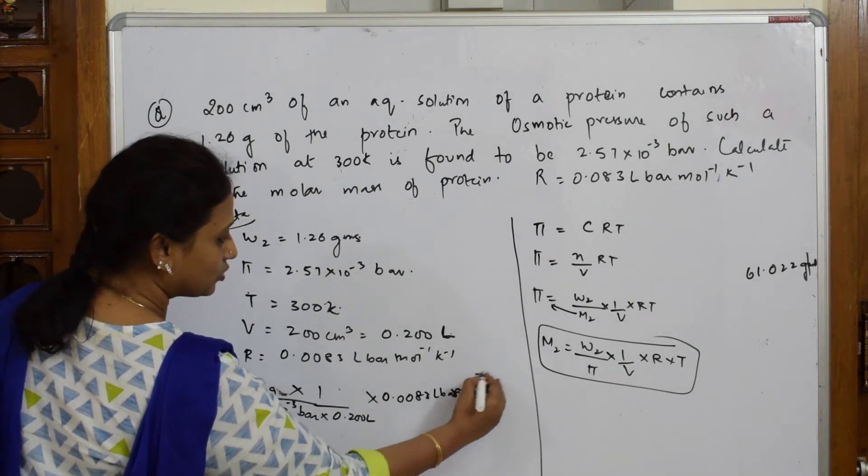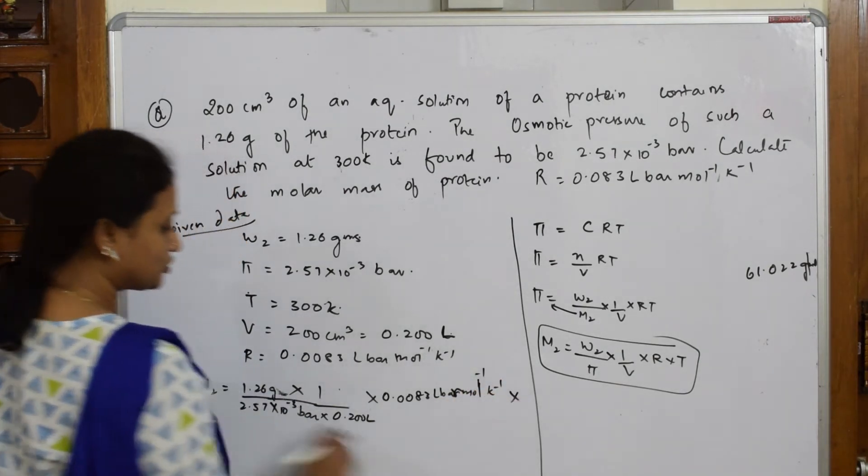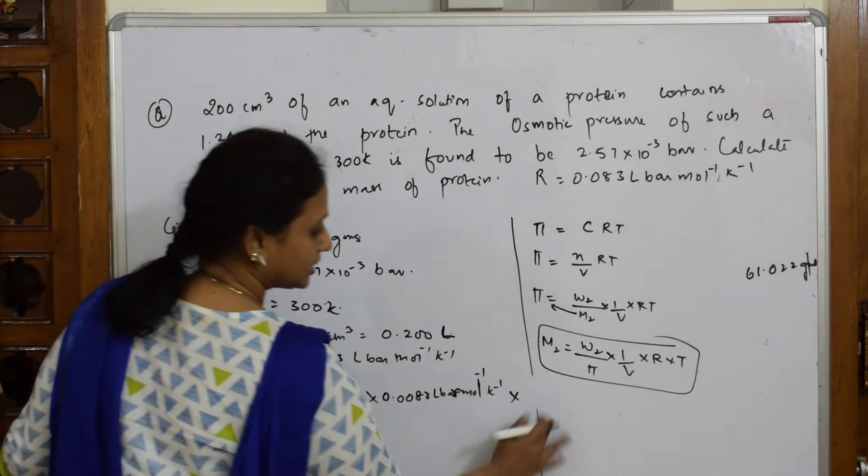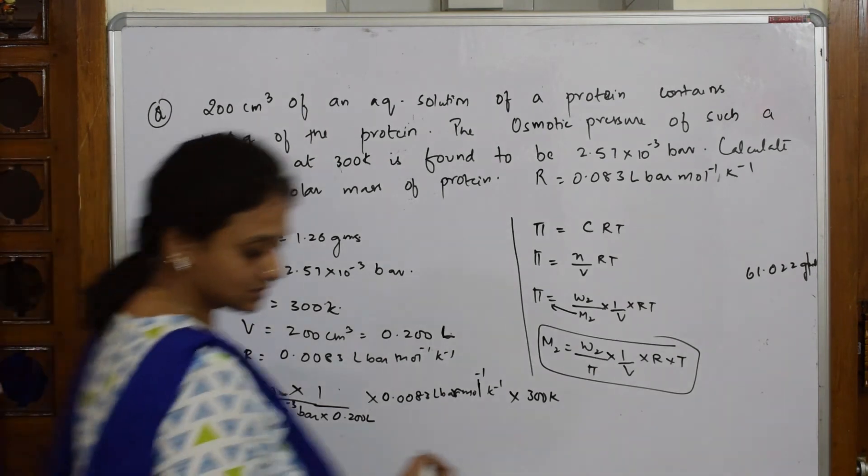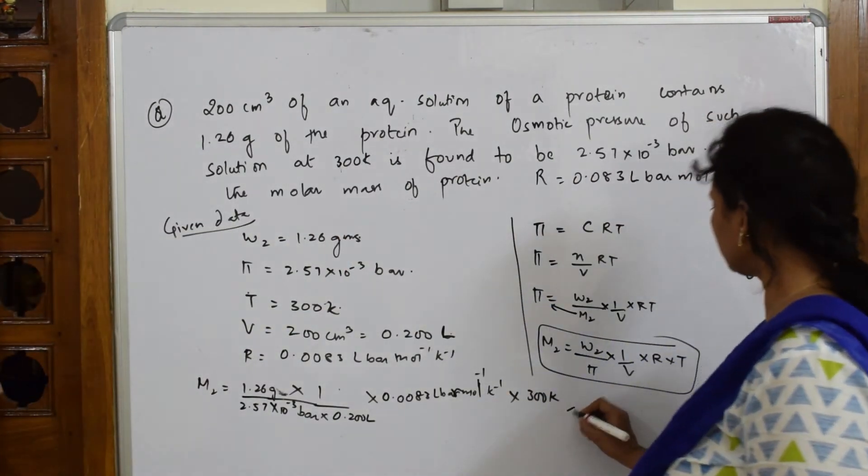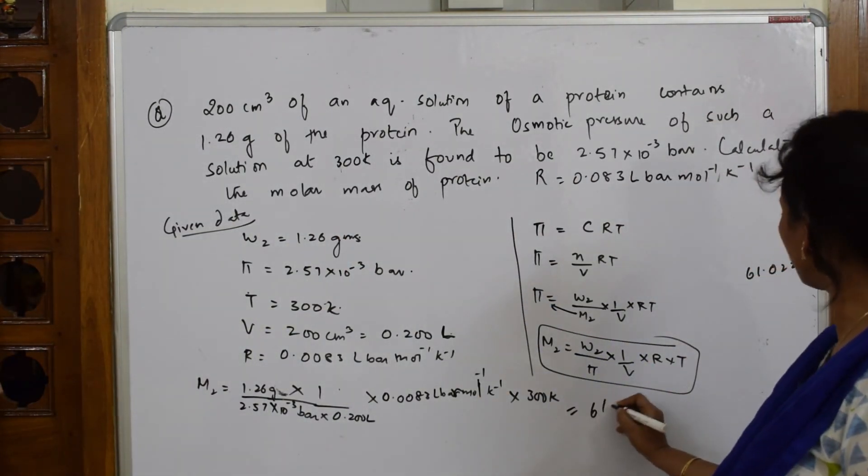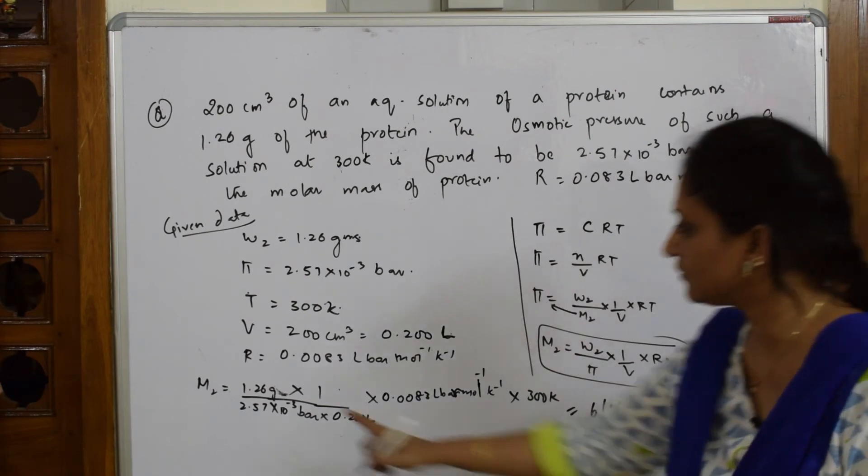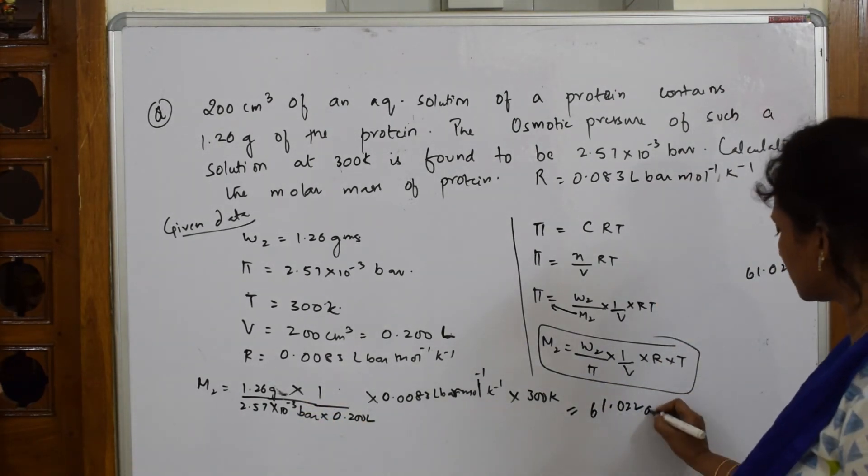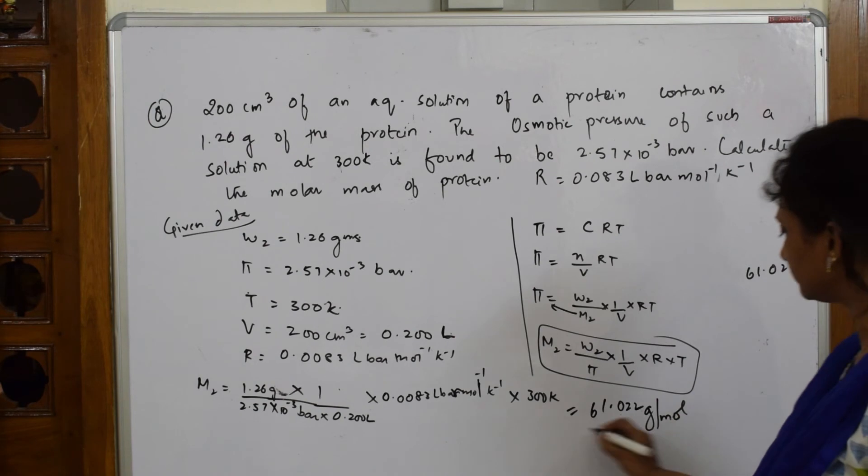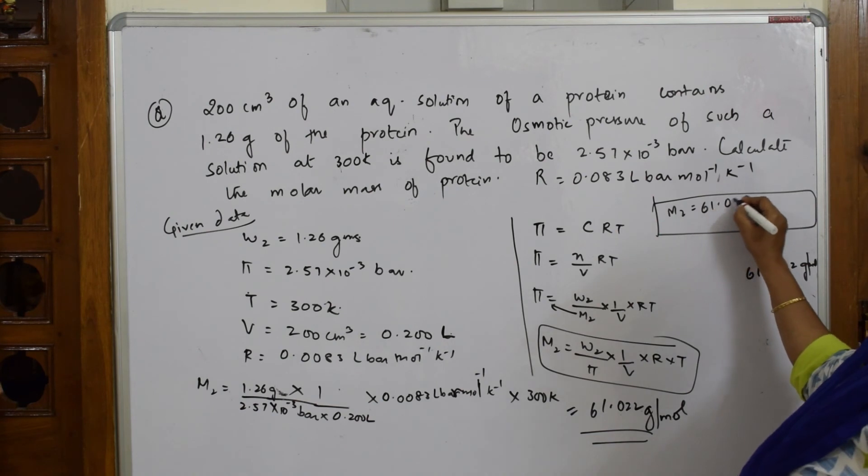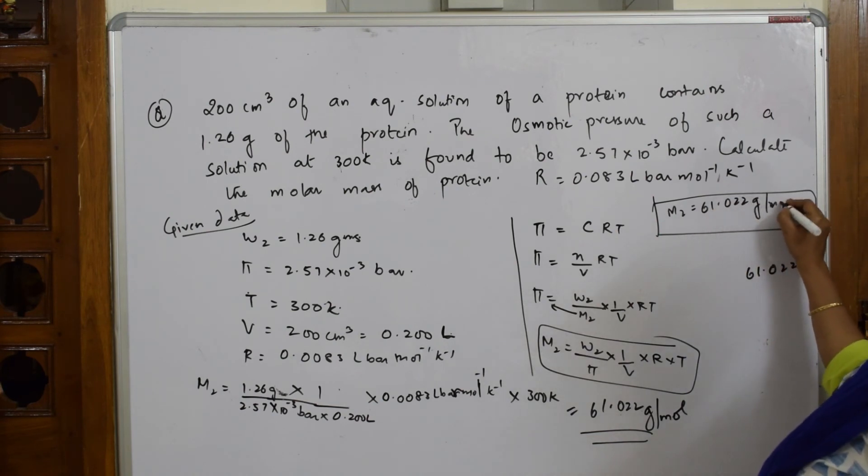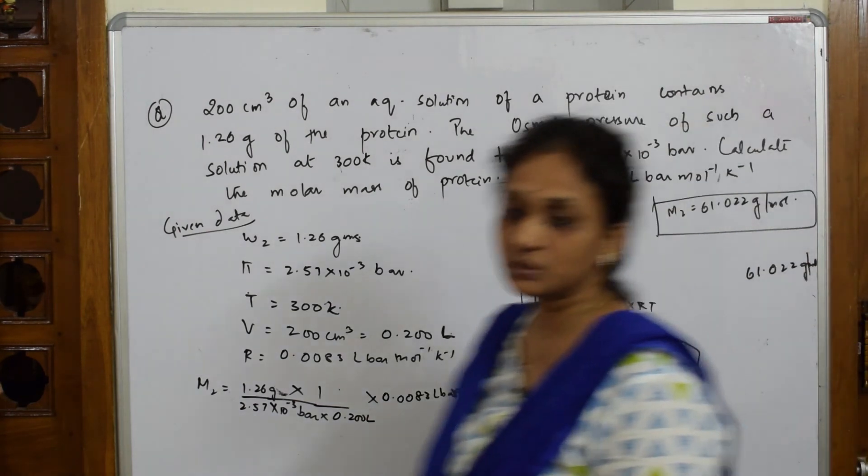When I solve this, I get an answer of 61.022. This is molecular mass, so it is gram per mole. So the answer which I got is M2 is equal to 61.022 gram per mole, molecular mass units.